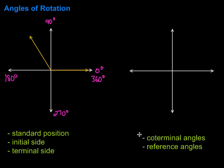Coterminal angles are angles that both end in the same place, but we get to them in different ways. For example, we have an angle sitting here that's approximately 120 degrees. A coterminal angle to that — let's say we have a line drawn here, so that's our first piece.